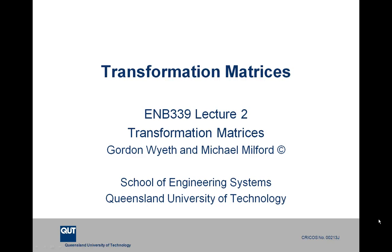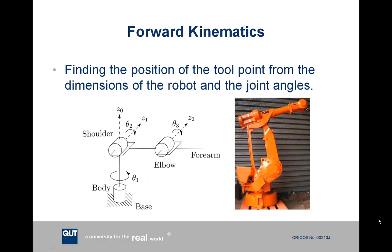Welcome to ENB 339, lecture number 2 on Transformation Matrices. Today's lecture is about finding the position of the tool point of a typical robot arm. The tool point is the part of the robot which usually does a useful thing like welding or picking up something. It's generally at the end of the robot arm. The lecture is about finding where this is located based on the dimensions of the robot — how long its various links or arm parts are — and also the angles of the joints.